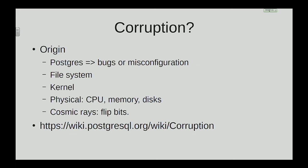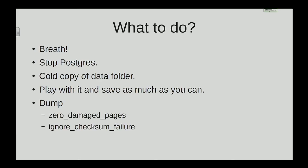There is a wiki page on that. If you see any kind of corruption, read it first — it has a lot of references. So what should you do when corruption happens? First: take a breath. Then stop PostgreSQL immediately. You are in save-as-much-as-you-can mode. One thing people tend to forget before playing with a broken data folder: take a cold copy of the data folder itself, which you can then begin to work with to save as much data as possible.